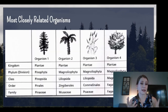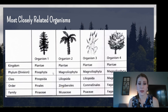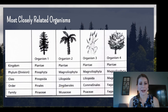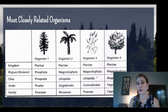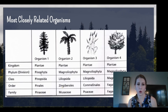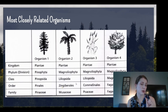We can also use these taxa to see how closely related organisms are. If they're all in the same kingdom, that's one level of organization they share. But as they start to drift apart, they become more and more separate. So if organism 1 is in a different phylum than organisms 2, 3, and 4, it's not as closely related to those three as they are to each other. Then if organism 2 and 3 share the same class but organism 4 does not, then 2 and 3 are most closely related so far.